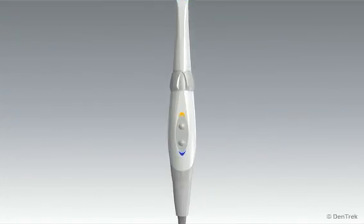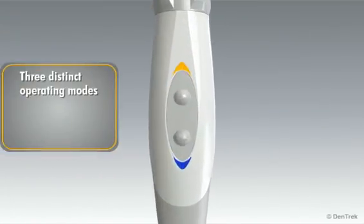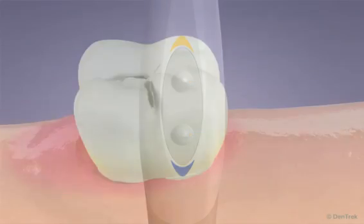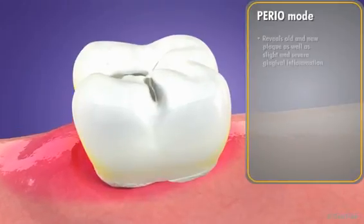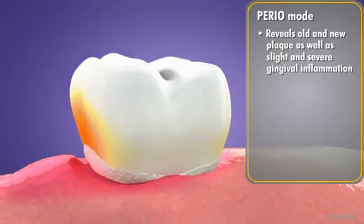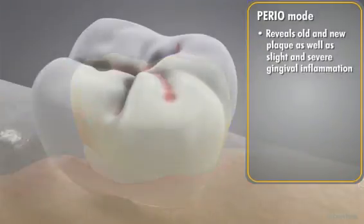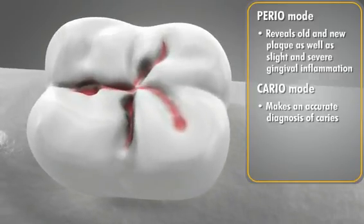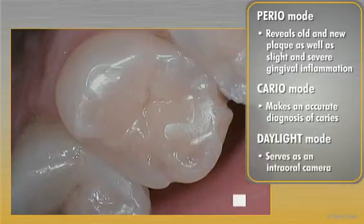The SOPROCare camera utilizes three distinct operating modes — perio, cario, and daylight — to reliably and consistently capture the critical information needed for routine periodontal and caries checkups. Perio mode reveals old and new plaque as well as slight and severe gingival inflammation. Cario mode makes an accurate diagnosis of caries, and daylight mode serves as an intraoral camera.